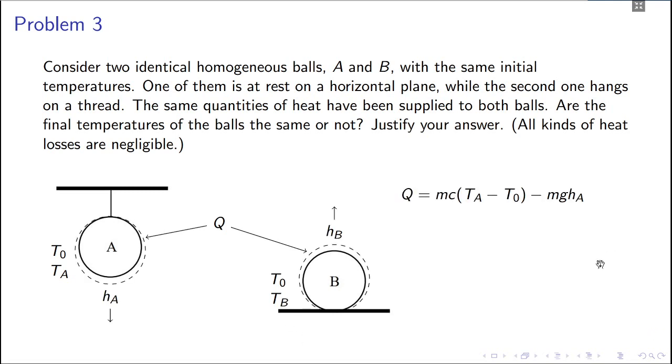You just write down the first law of thermodynamics here. So the heat supplied will go into the change of temperature and change of potential energy. For the first sphere here you can write Q equals mc times delta T, so that's TA minus T0 minus mghA. Since it goes down there will be a minus sign. And for the same one, if you write for this other ball, here it's TB and here it will become a plus sign.